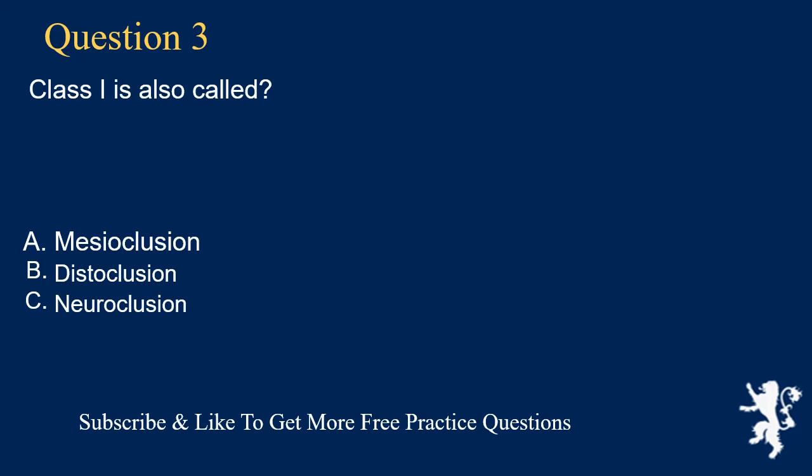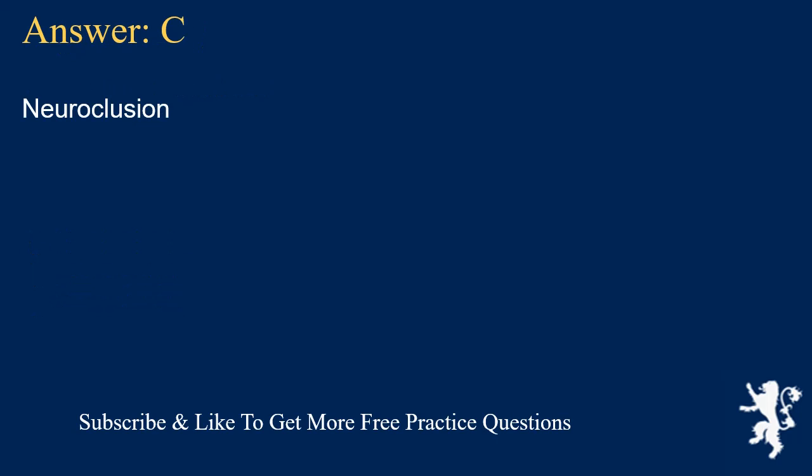Question 3. Class I is also called: a. Mesiocclusion, b. Distocclusion, c. Neurocclusion. Answer: C. Neurocclusion.